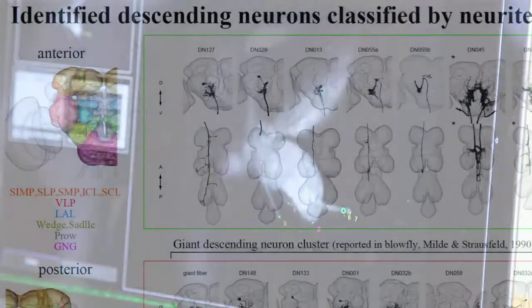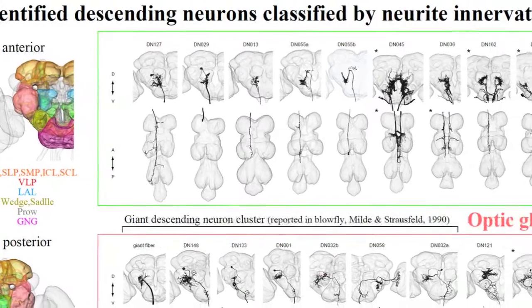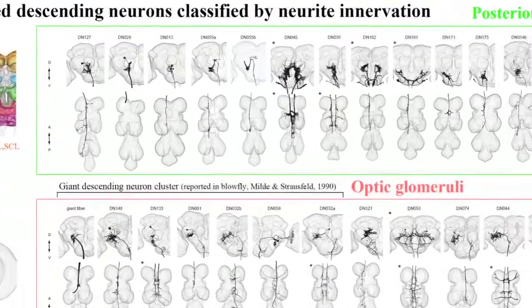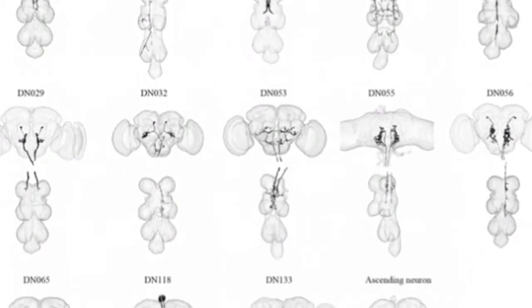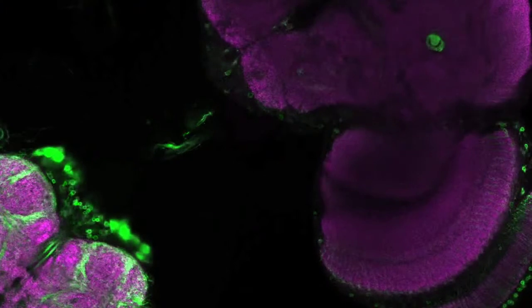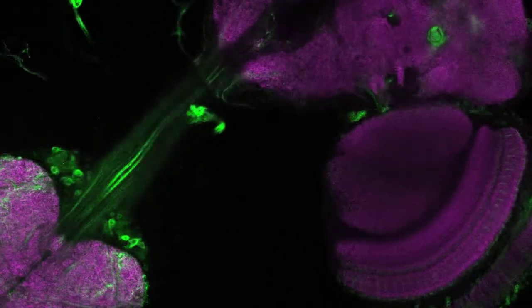We've been working in a collaborative project here called the Descending Interneurons Project with a postdoc hero who's really been the anatomist who generated these descending neuron lines that everyone uses. So far, we've identified about half of all of these descending neurons, and this includes identifying what they look like.